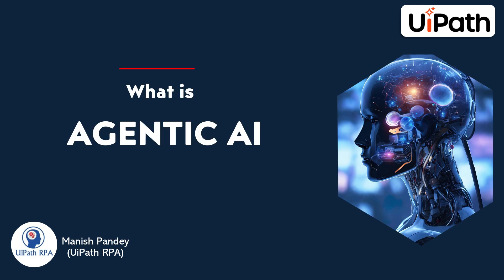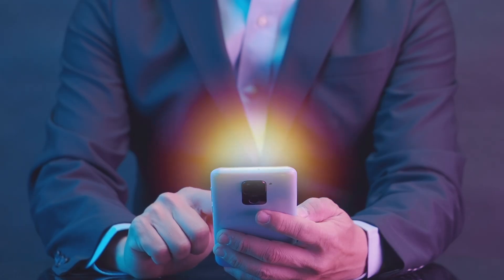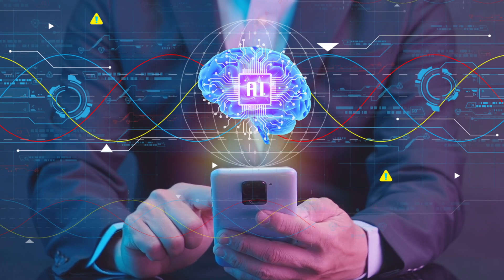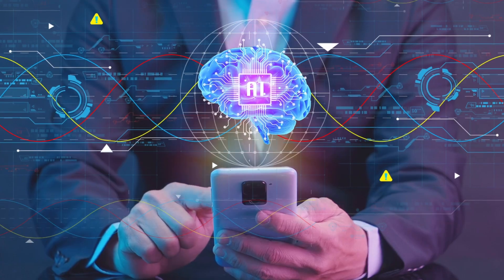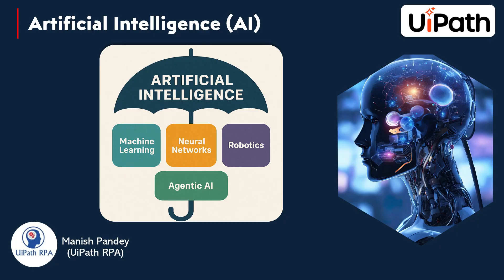Before we talk about agentic AI, let's take a small step back. Do you know about AI — artificial intelligence? We can say artificial intelligence is the big umbrella, and everything like machine learning, neural networks, robotics, agentic AI, and computer vision all fall under artificial intelligence. Each field that is a part of artificial intelligence has its own capabilities. Like, if you talk about generative AI, which is also a type of artificial intelligence,